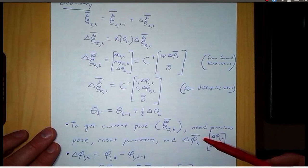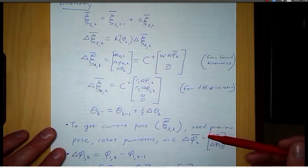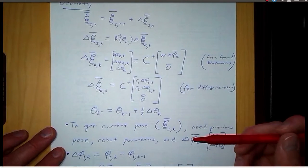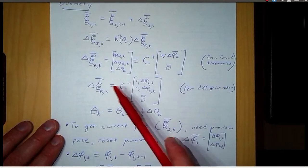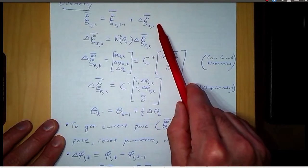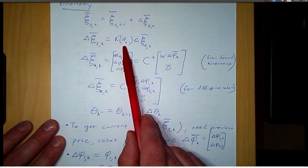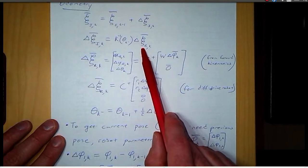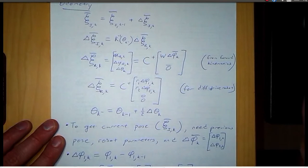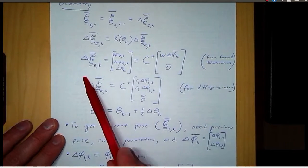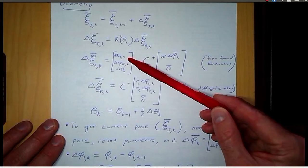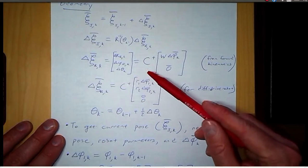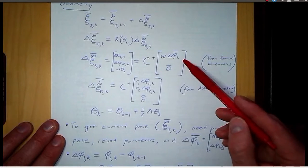We are given the previous position, we're given the wheel angles, and then of course we're given the robot parameters so that we can come up with the C matrix and W. Given all those things, we will be able to compute delta psi i at time k. The way we do that is use the inverse of the rotation matrix and the change in Cartesian coordinates expressed in the robot frame, so delta psi r at time k. Delta psi r is delta x r at time k, delta y r at time k, and delta theta at time k.